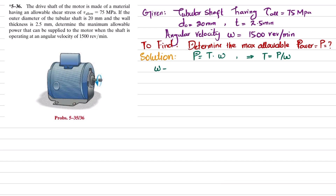The angular velocity is given as 1500 RPM, so we first convert it to radians per second: 1500 × (2π radians / 60 seconds). Solving this gives omega equal to 50π radians per second.